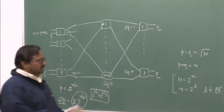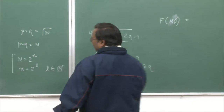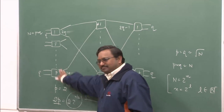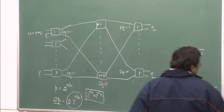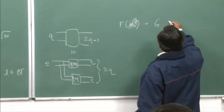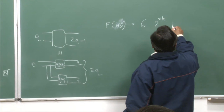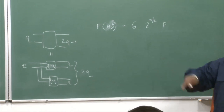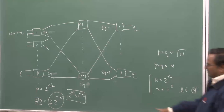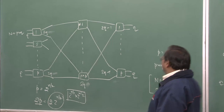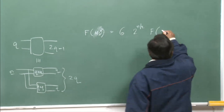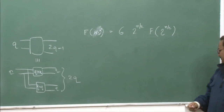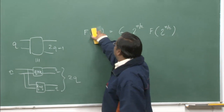In total — 2·2^(n/2) from each of the three stages — I require 6·2^(n/2) elements of size 2^(n/2) × 2^(n/2). So I can write the cross-point complexity of this recursively, and I have the recursive relation now.